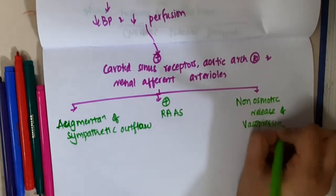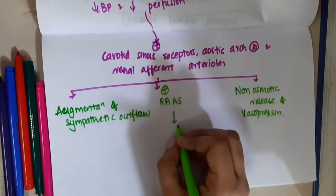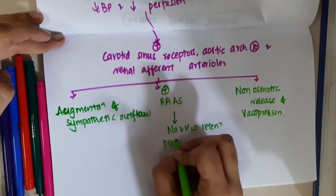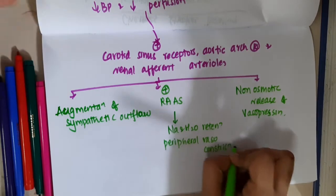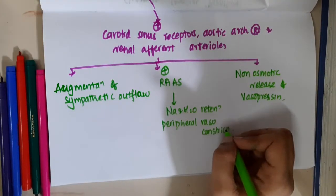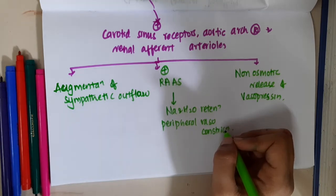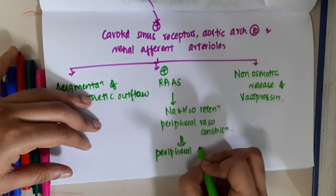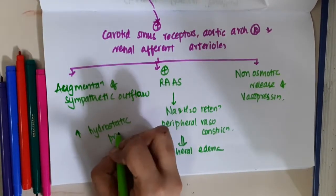Because of this, the renin-angiotensin-aldosterone system will cause sodium and water retention and it also causes peripheral vasoconstriction. This will lead to peripheral edema.